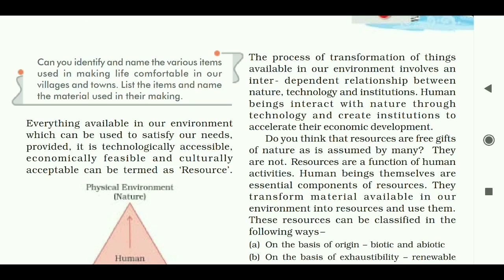The next thing is: the process of transformation of things available in our environment involves an interdependent relationship between nature, technology, and institutions. Human beings interact with nature through technology and create institutions to accelerate their economic development. So what is the process of transformation? It is the process of transformation through 3 interdependent things — nature, technology, and institutions.